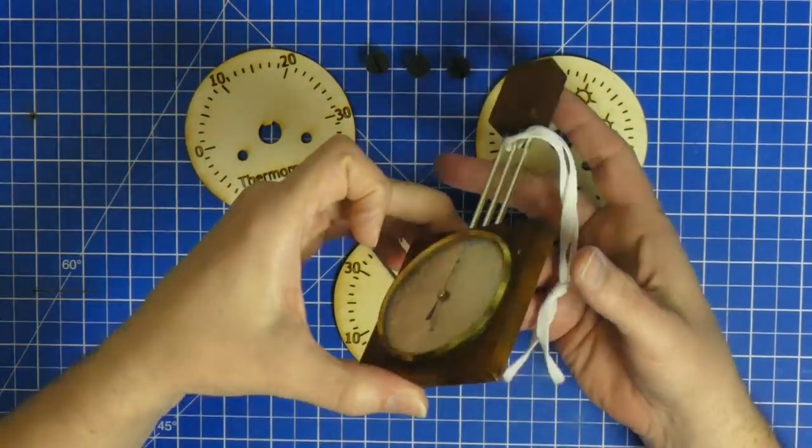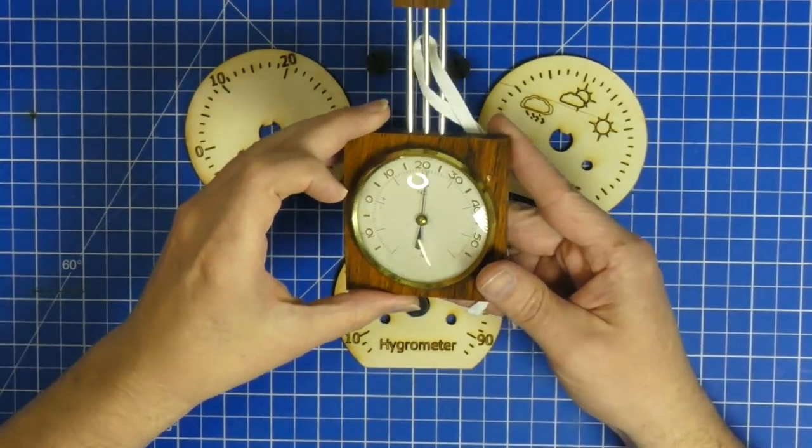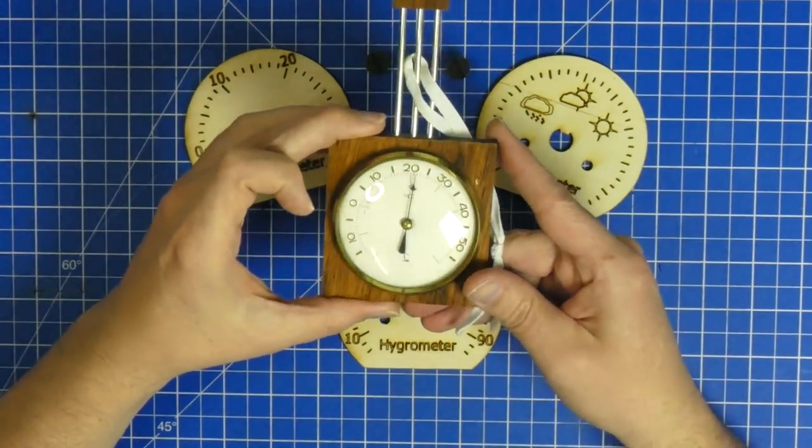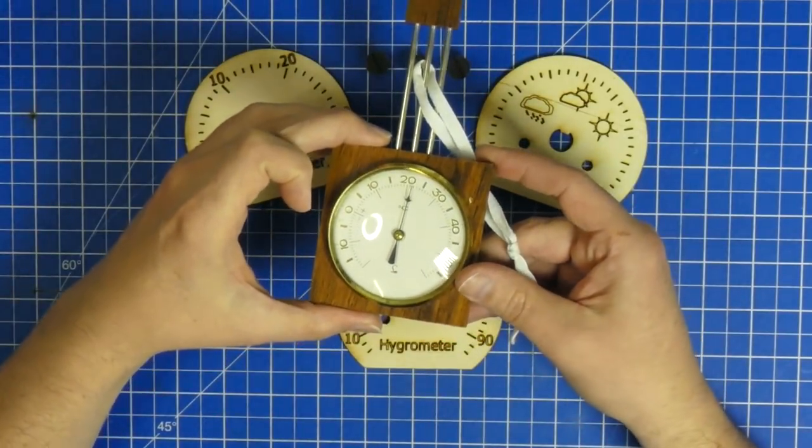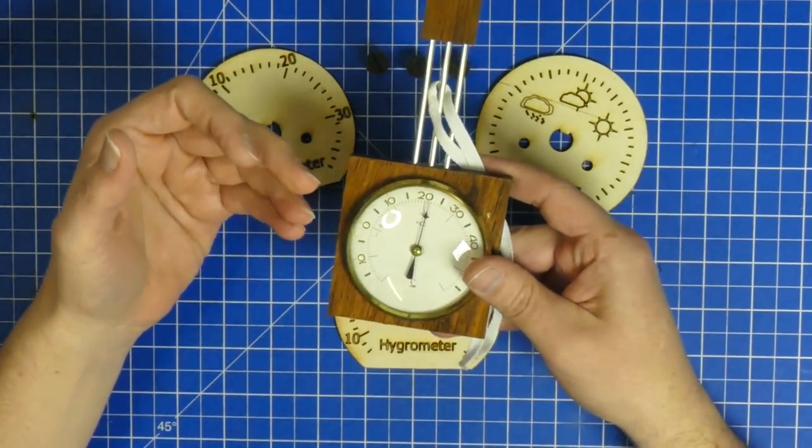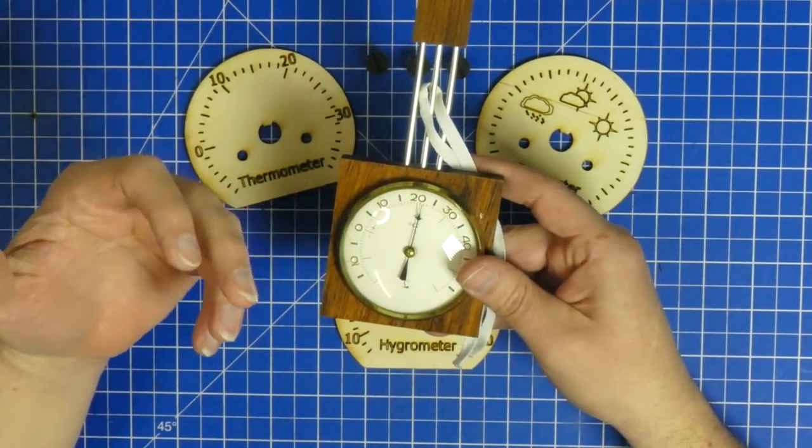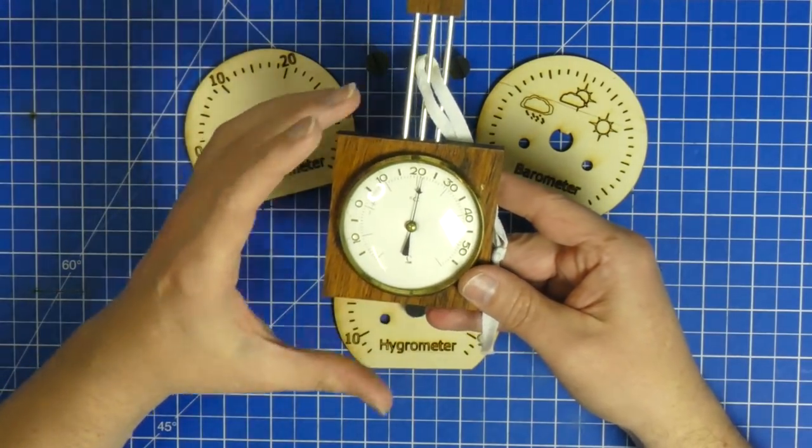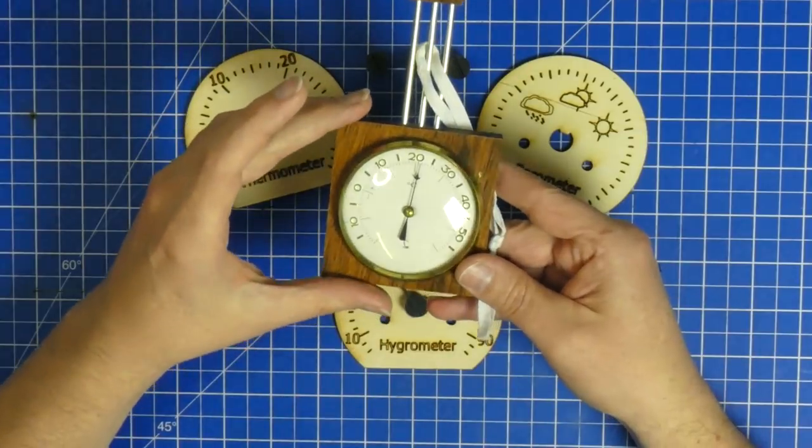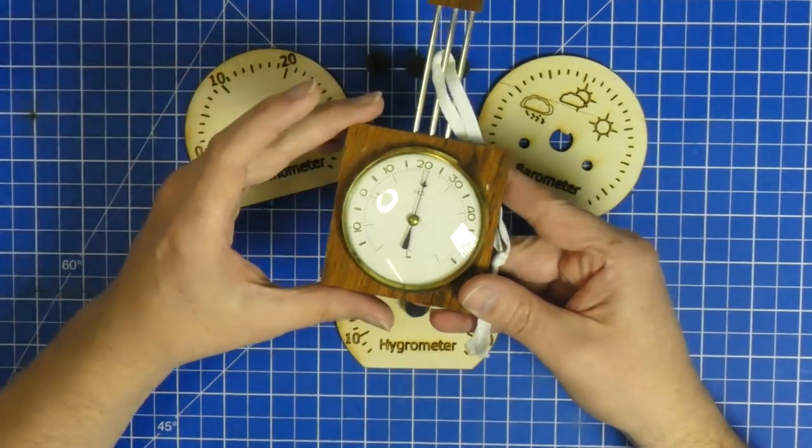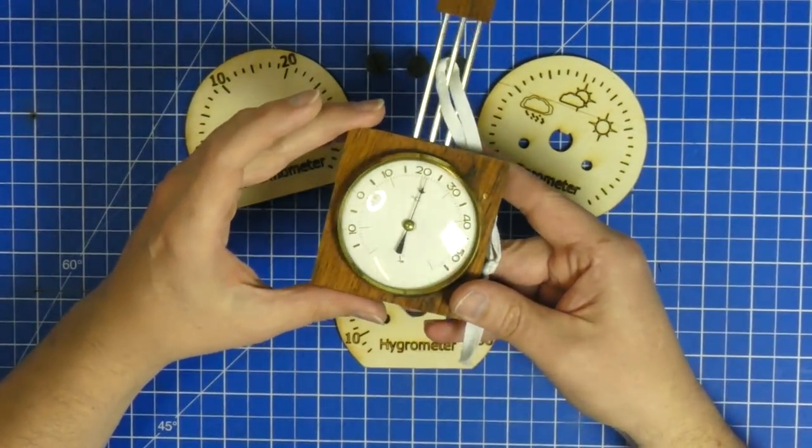For example, take a look at this thermometer. It is actually 60 years old but it still does exactly what you expected to do. It shows you the temperature and although fonts may have changed and styles may have changed, this thing is still good the way it is today and the way it was 60 years ago.